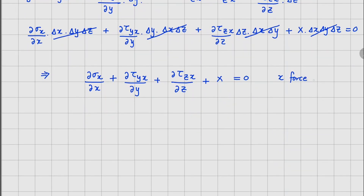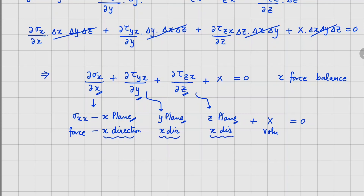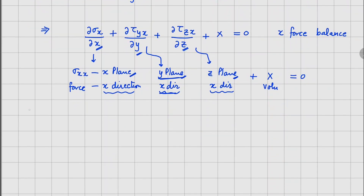This is the x-force balance equation. Sigma_x is sigma_xx — on the x-plane, force in the x-direction. Tau_yx is on the y-plane, force in the x-direction. Tau_zx is on the z-plane, force in the x-direction, plus the volumetric body force X equals zero. Notice the derivatives always correspond to the plane: x-plane gives ∂/∂x, y-plane gives ∂/∂y, z-plane gives ∂/∂z — and all force directions here are x.